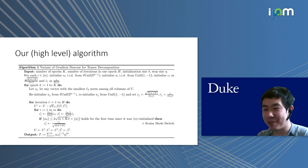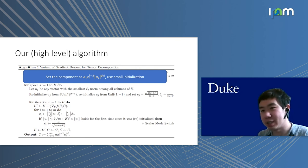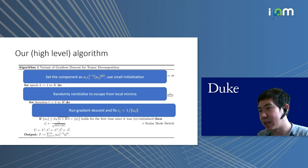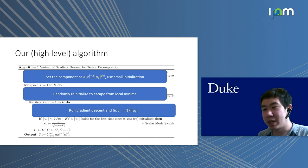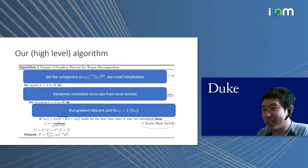Here is our algorithm. The algorithm unfortunately ends up fairly complicated. The first part says we parameterize the components as the two-homogeneous reparameterization I mentioned, and we use a small initialization. For each epoch, we first randomly reinitialize a small number of components to escape from local minima, then run gradient descent while fixing the scaling of c_i to one over the norm of u_i. There is also one extra step—we use different step sizes when the norm of a component is small versus large, which we call the scalar mode switch. We need this step in our proof, but we don't know whether it's necessary in practice.